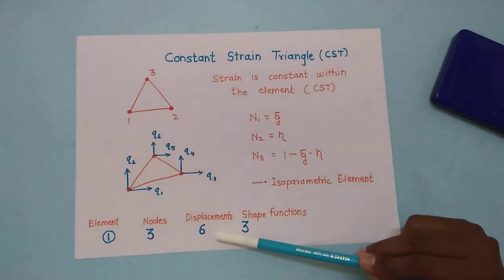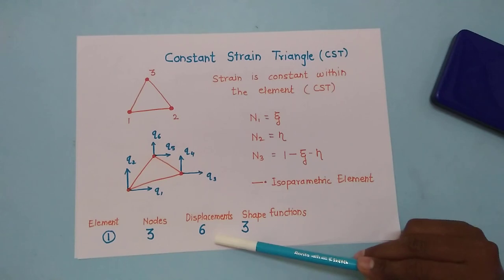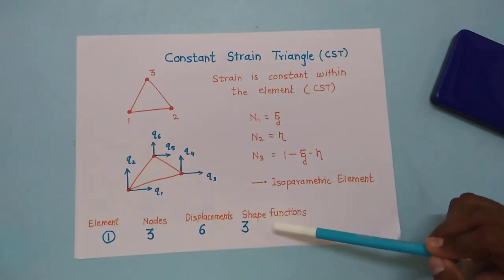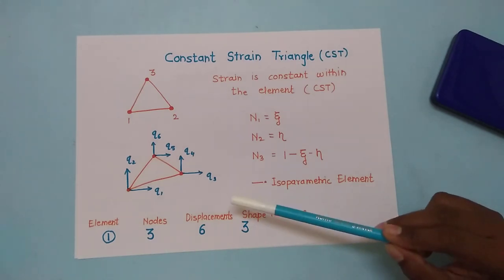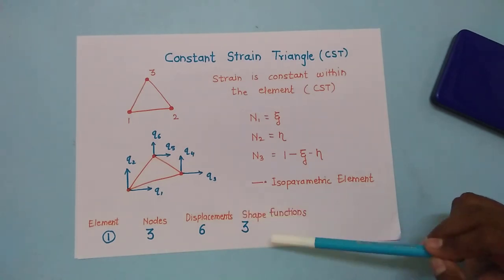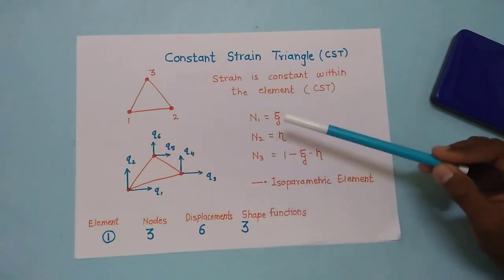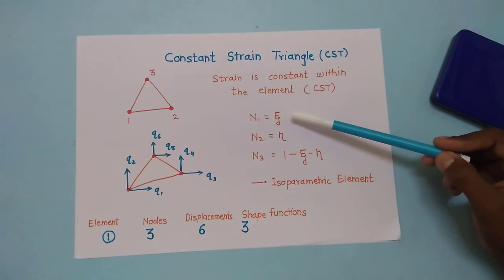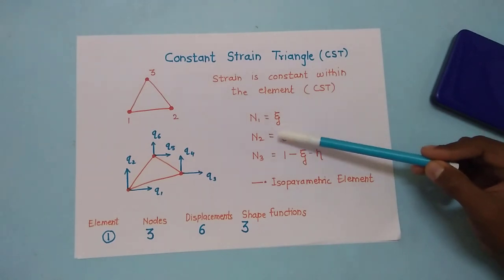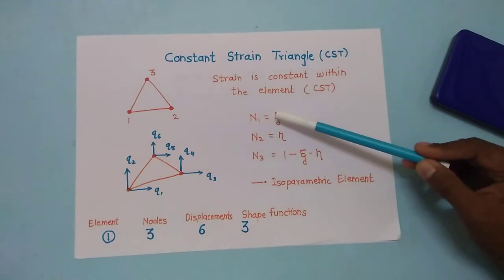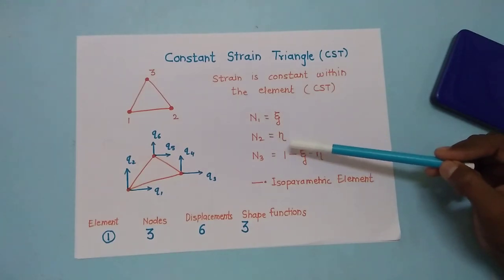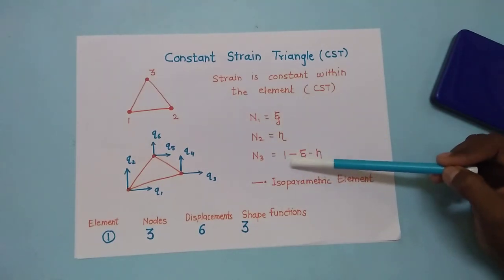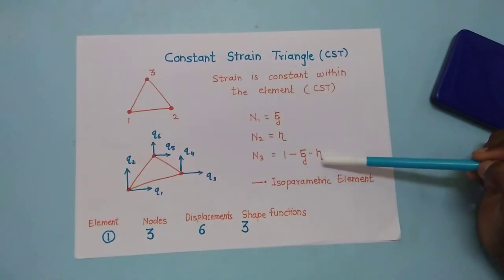For this single element, we get six displacements and three shape functions — one shape function at each node. These are expressed in the natural coordinate system: N1 equals zeta, N2 equals eta, and N3 equals 1 minus zeta minus eta.